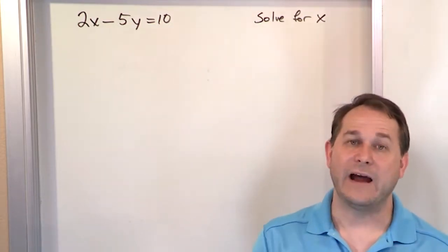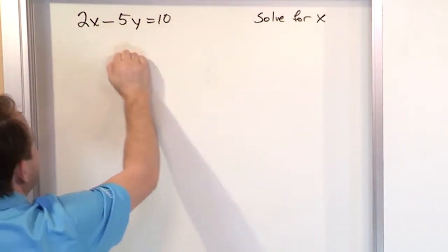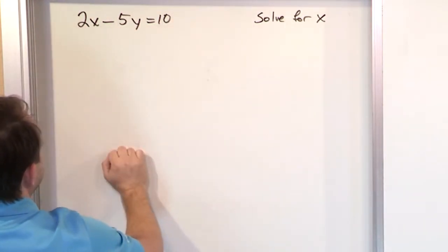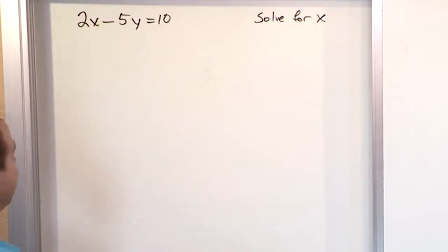So when you're asked to solve for x, what it means is take everything else except for x and get it over somewhere else, on the other side. And then we'll divide by that 2 at the end, and we'll have x on one side by itself. That's all you're trying to do.